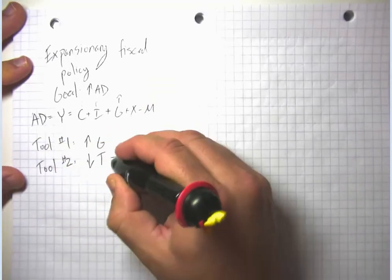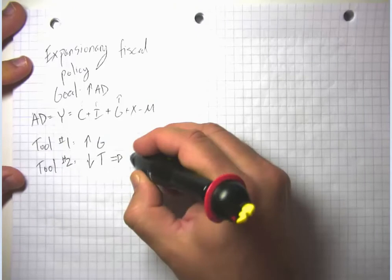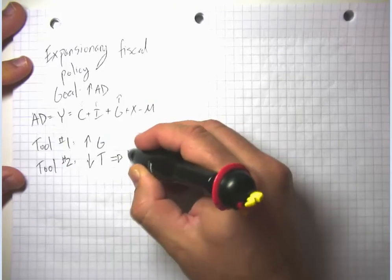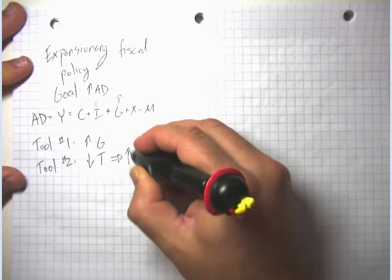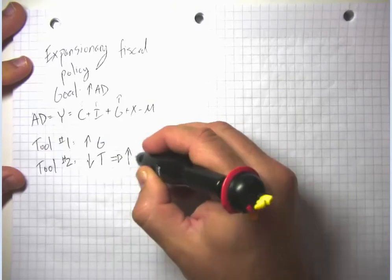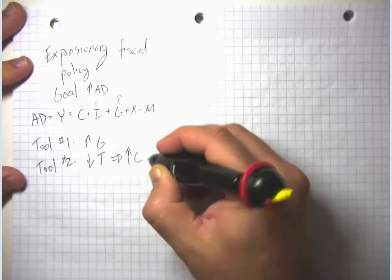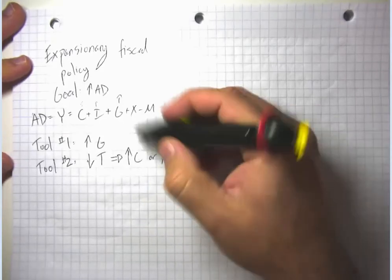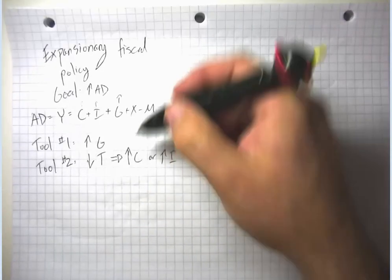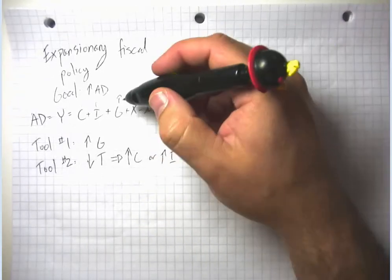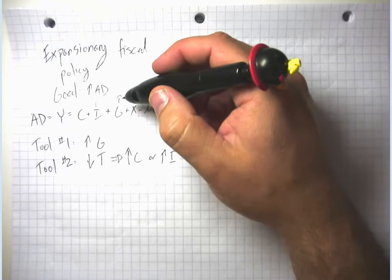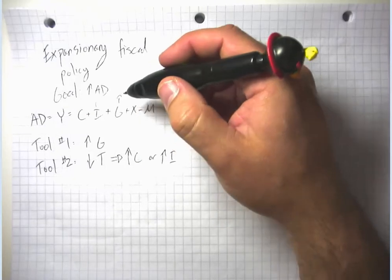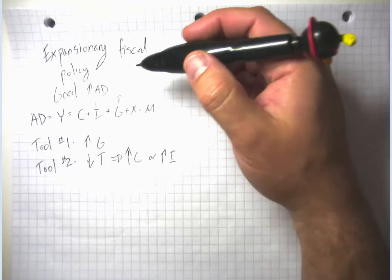Notice the tax cut is kind of indirect here. You can see that the impact on GDP is relatively straightforward — much simpler than it was in the case of monetary policy.